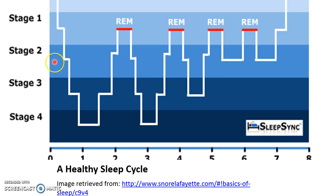From stage two, you go down to stage three. During stage three and stage four, this is the deepest sleep, and we see the presence of delta waves, letting us know that you're in a deeply altered state of consciousness. You are sound asleep — it will be very difficult to wake you up from stage three or stage four sleep.